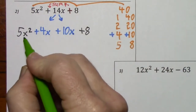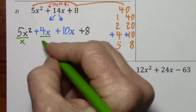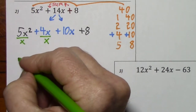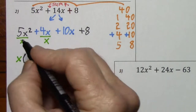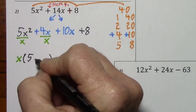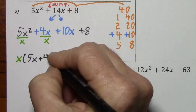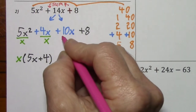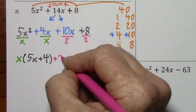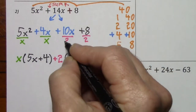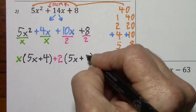Now for the grouping: group together the first two, factor out the GCF — in this case, x. Factoring out x will leave us with 5x, and factoring out x will leave us with plus 4. Grouping together the next two terms, the GCF is 2. Dividing by 2 leaves us with 5x, and dividing by 2 leaves us with plus 4.